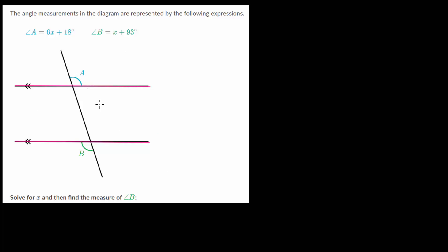A and B are what we refer to as alternate exterior angles. If we were looking at the inside, those would be alternate interior angles, but these two are going to be equal to each other. One way to see that is to look at the vertical angle to angle A — that angle right here is equal to A, and notice that A and B are now corresponding angles.